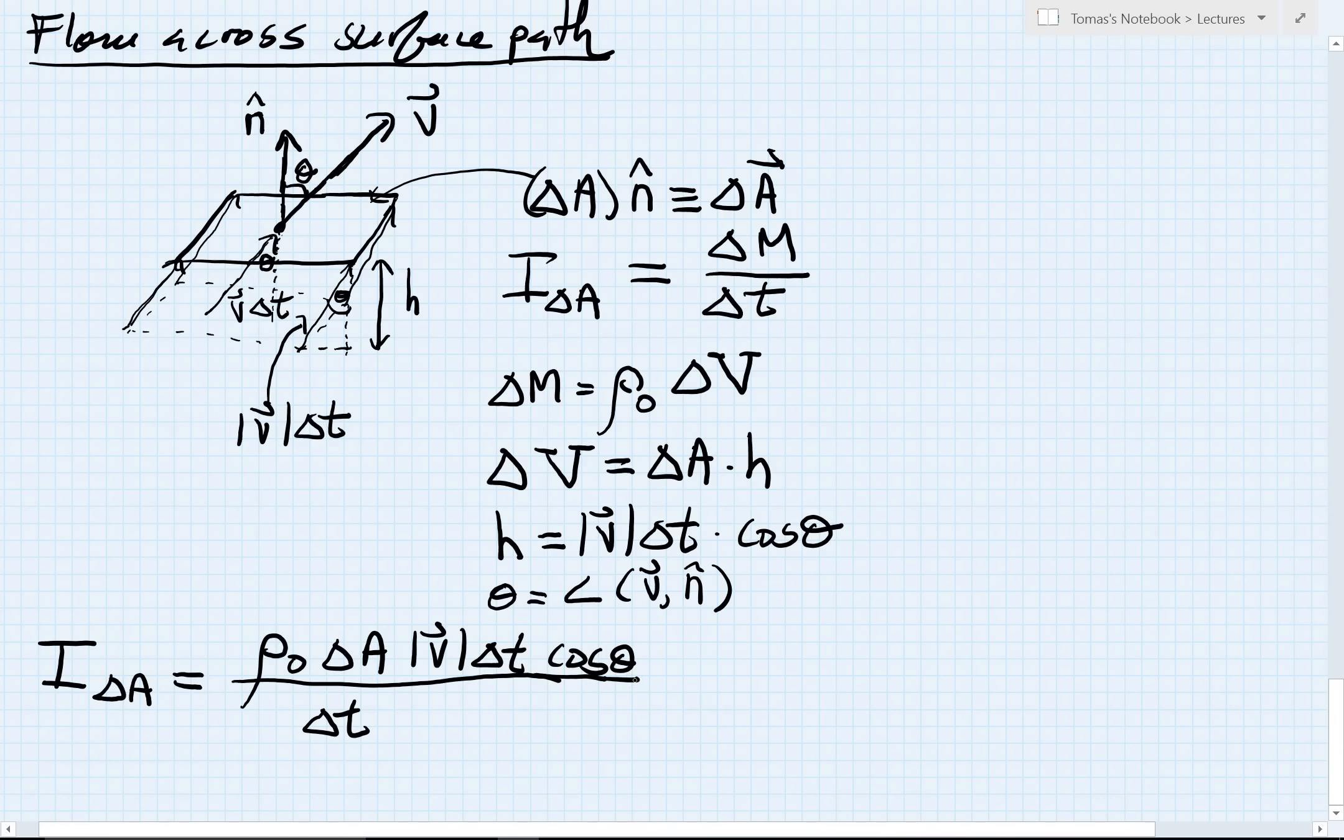Now we notice several interesting things. First, the time intervals cancel. That's very nice. And what I have here is interesting: I've got the magnitude of V times cosine theta. This is starting to sound like a dot product. I've got delta A, but notice delta A, the area of the patch, is just the magnitude of this vector we'd like to call delta A vector.